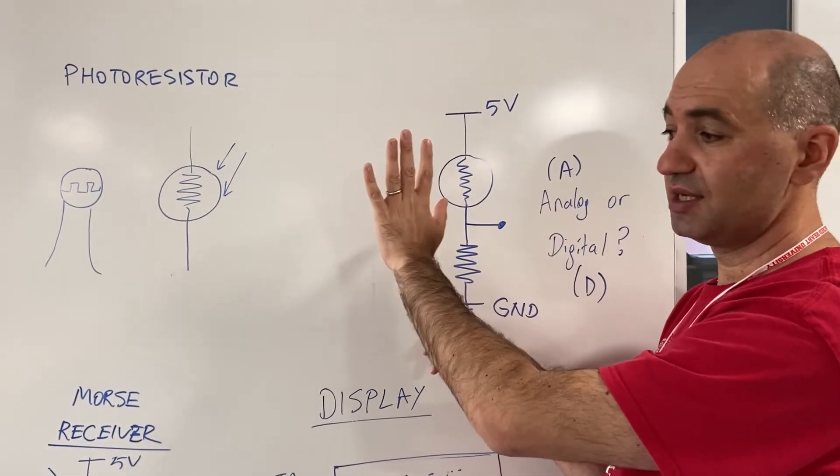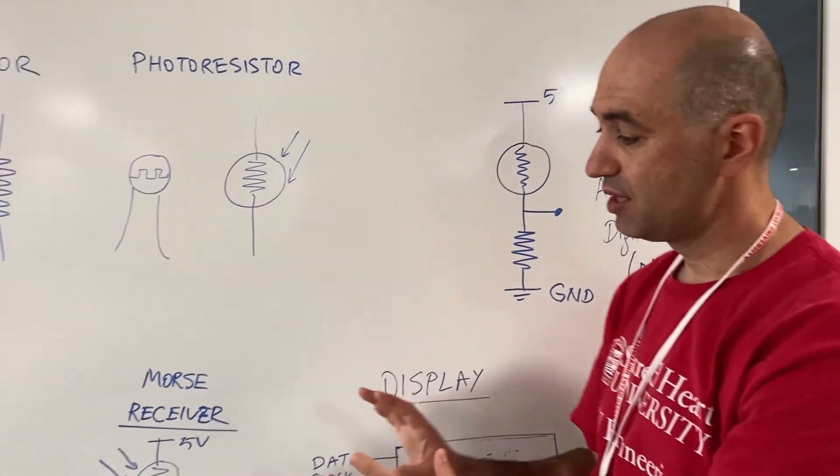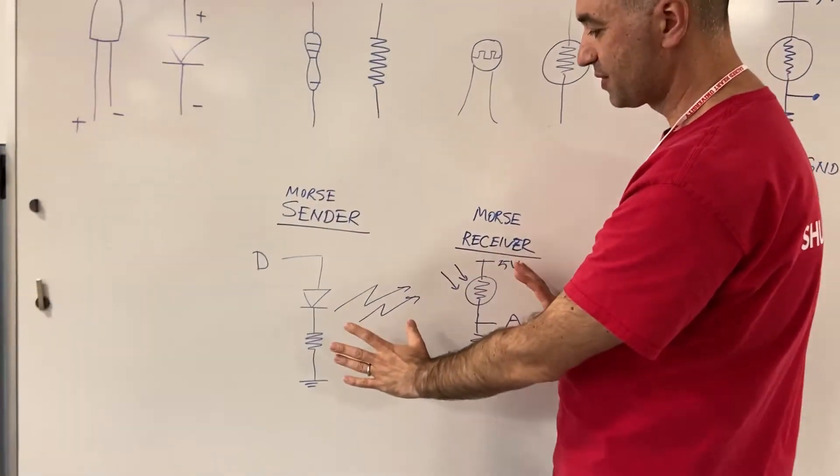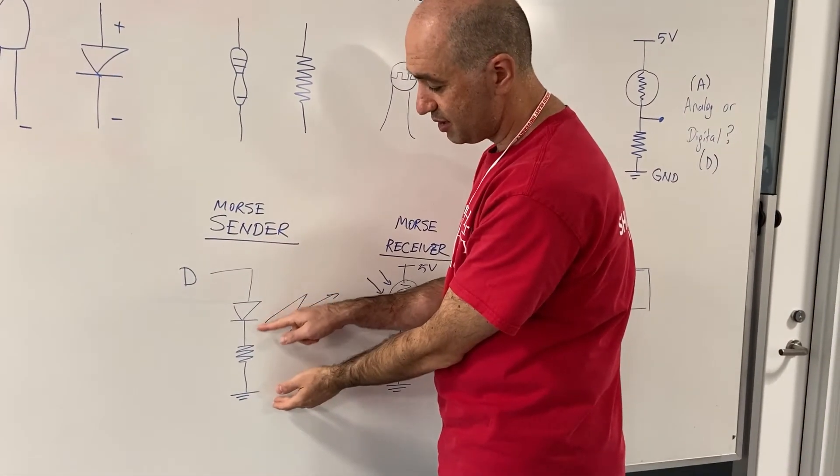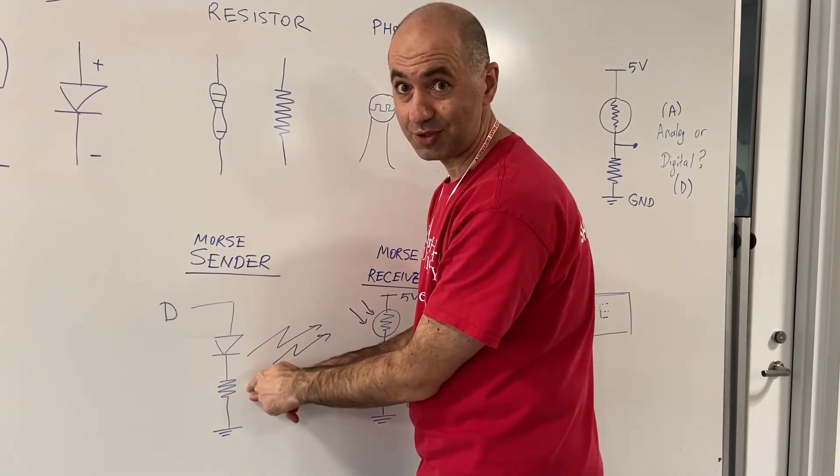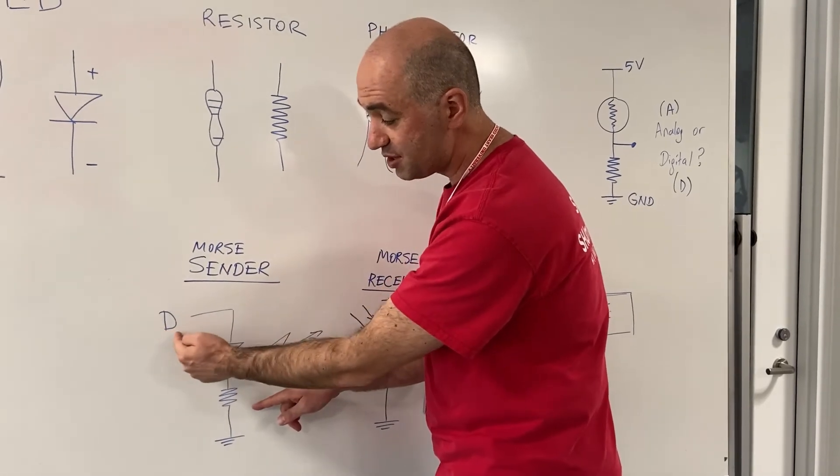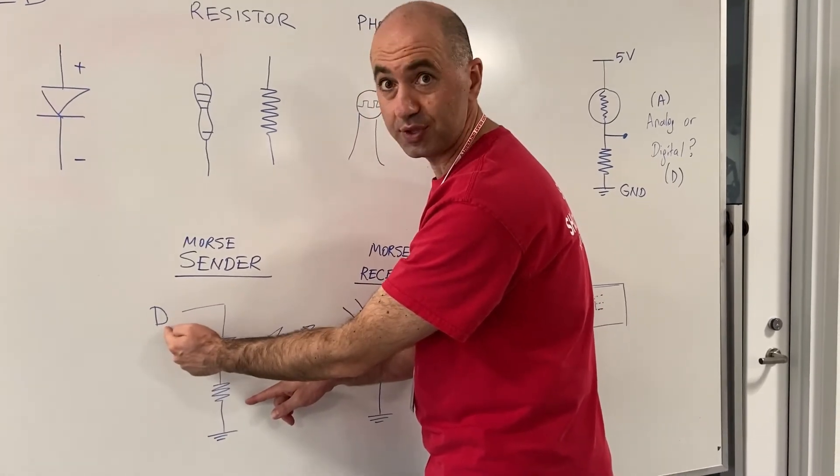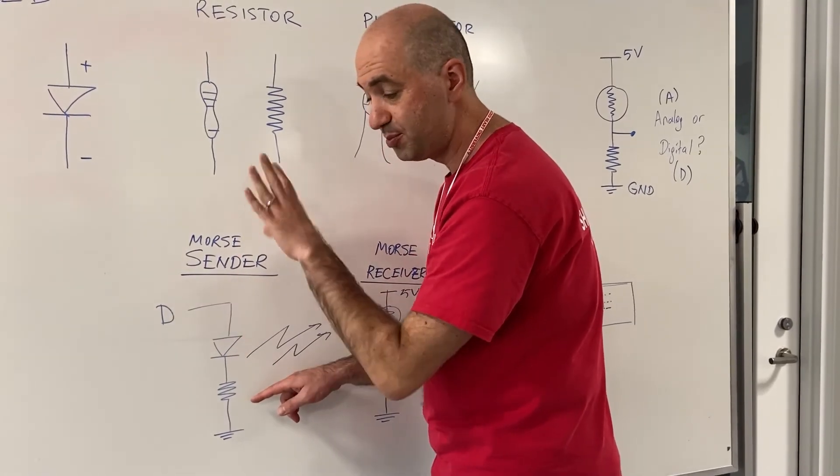These were the circuits. Now let's look at the circuit for the morse code sender and receiver. If you focus on this area, this is the circuit for the morse code sender: one LED, one resistor. We all know that we need to use a resistor because we know what happens if you don't use a resistor.